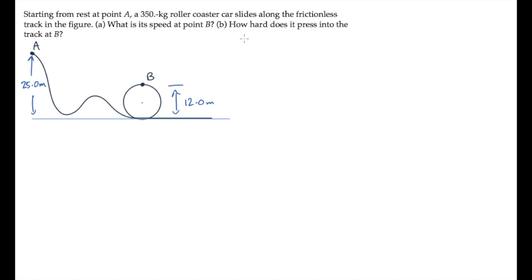The roller coaster car in this problem starts from rest at point A and slides along the frictionless track. We're asked to find its speed at point B. We'll do this using the work and energy equation.